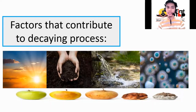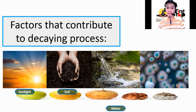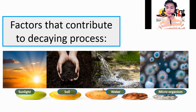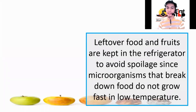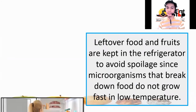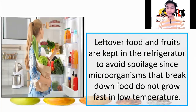What are the different factors that contribute to the decaying process? Sunlight, soil, water, and actions of microorganisms. Leftover food and fruits are kept in the refrigerator to avoid spoilage, since microorganisms that break down food do not grow fast in low temperature.